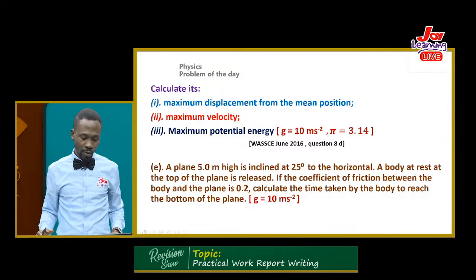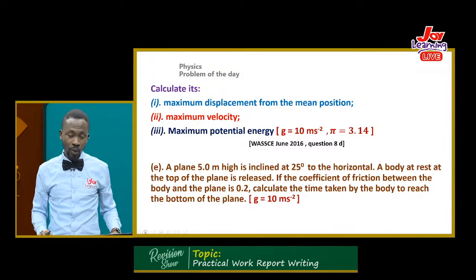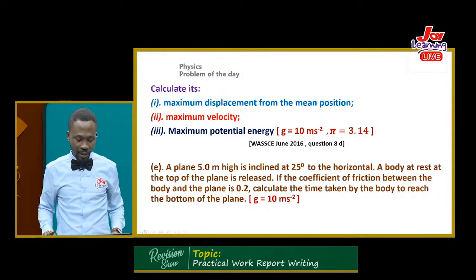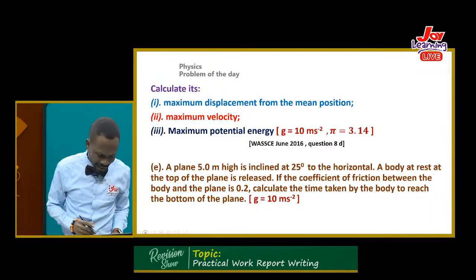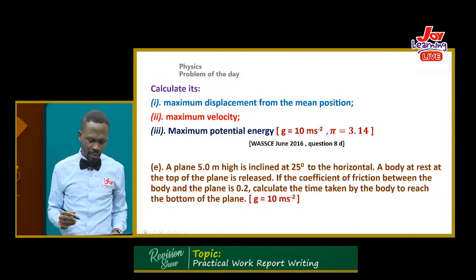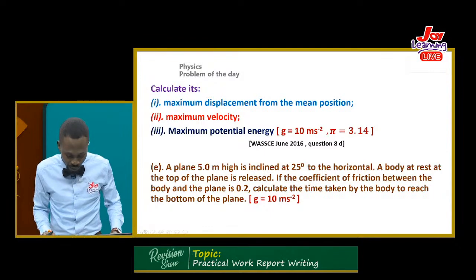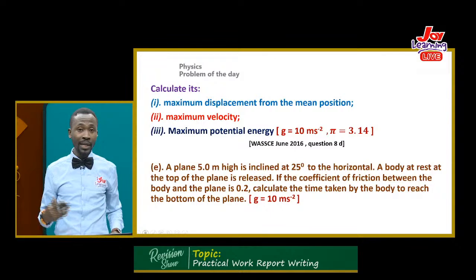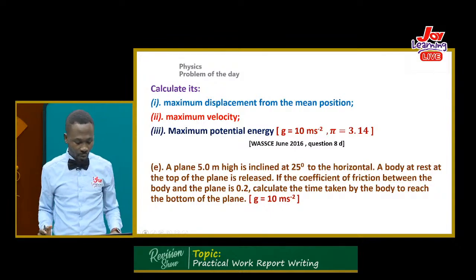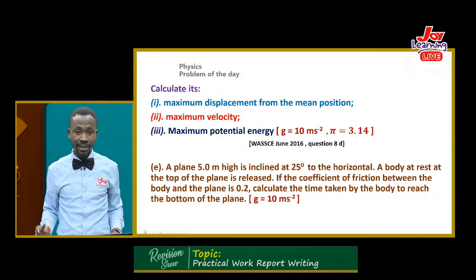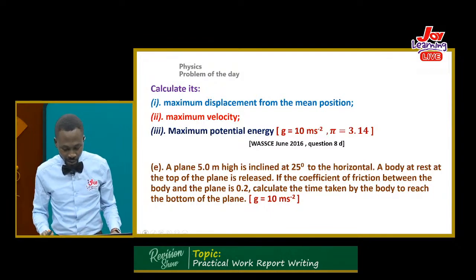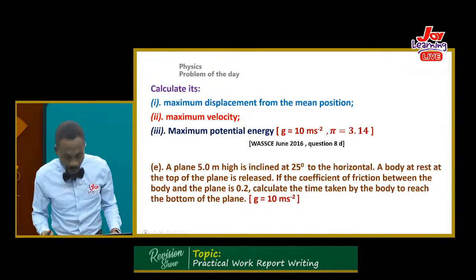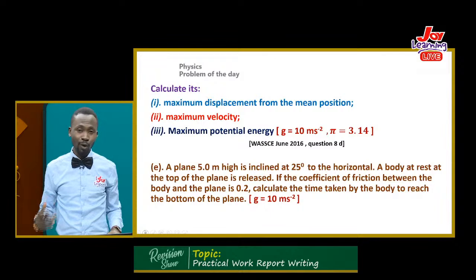We're given g = 10 ms⁻², and π = 3.14. This particular one is a past question. The last one says: a plane 5.0 metres high is inclined at 25 degrees to the horizontal. A body at rest at the top of the plane is released. If the coefficient of friction between the body and the plane is 0.2, calculate the time taken by the body to reach the bottom. That is the problem of the day, and because it is an interactive show, I will give you time to call in as you answer the questions.